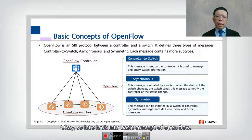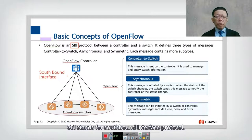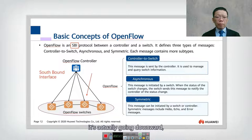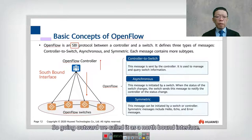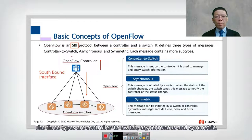Let's look at the basic concept of OpenFlow. OpenFlow is an SBI — a Southbound Interface Protocol. Southbound means going downward toward the devices, while going upward is called the Northbound Interface. OpenFlow is a Southbound Interface Protocol between a controller and a switch, and it defines three types of messages: controller-to-switch, asynchronous, and symmetric.